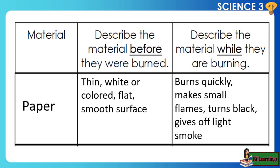Material: Paper. Describe the material before it was burned — thin, white or colored, flat, smooth surface. Describe the material while it is burning — burns quickly, makes small flames, turns black, gives off light smoke.